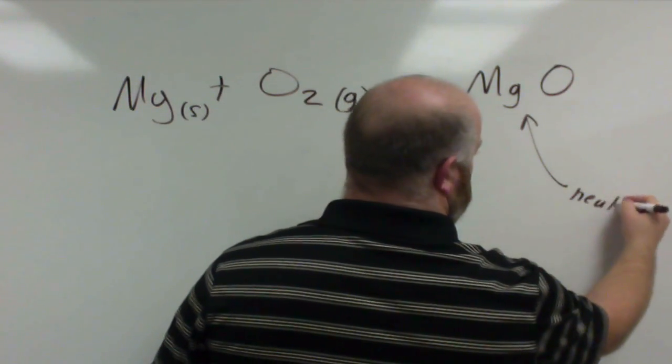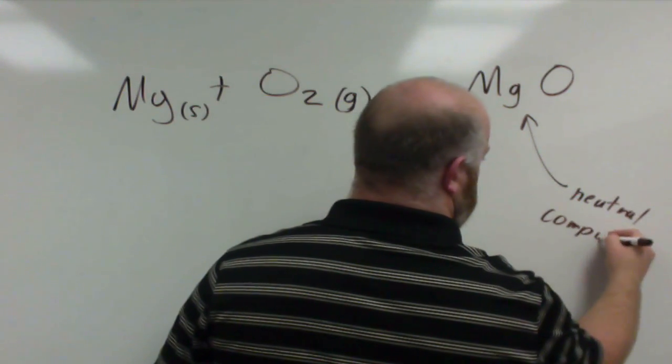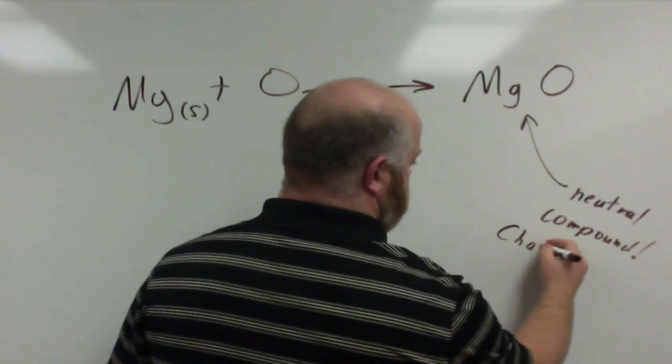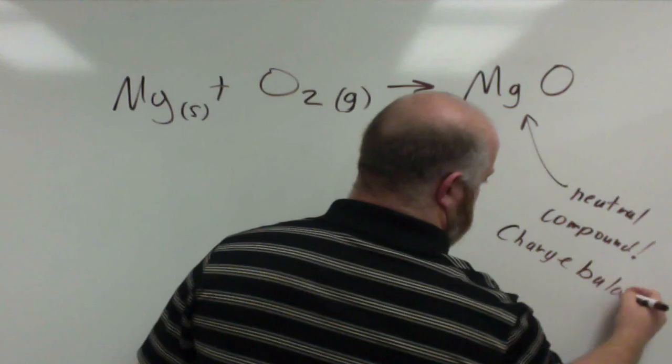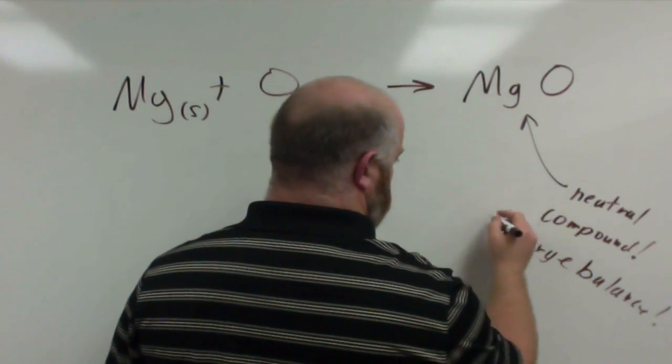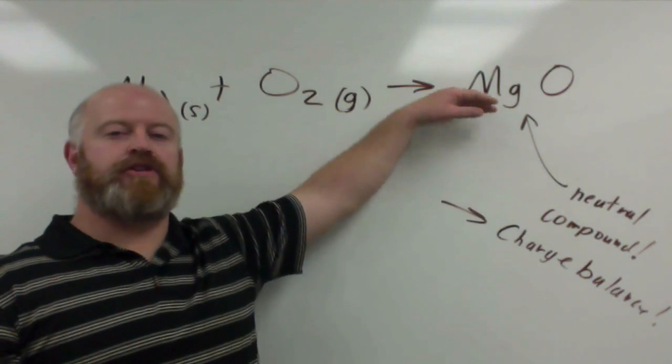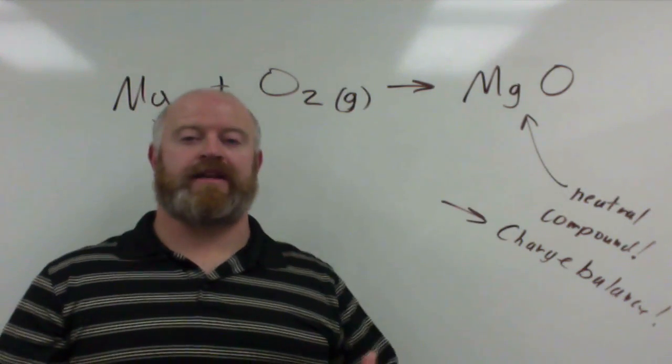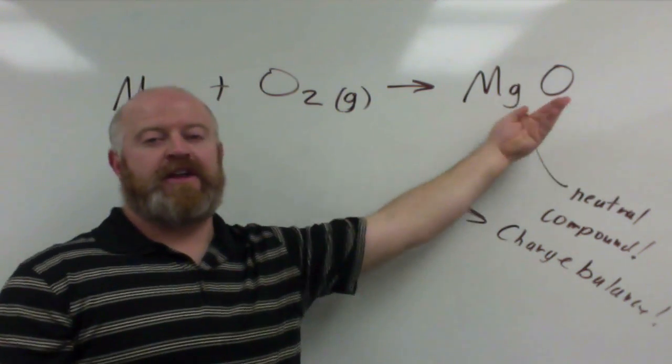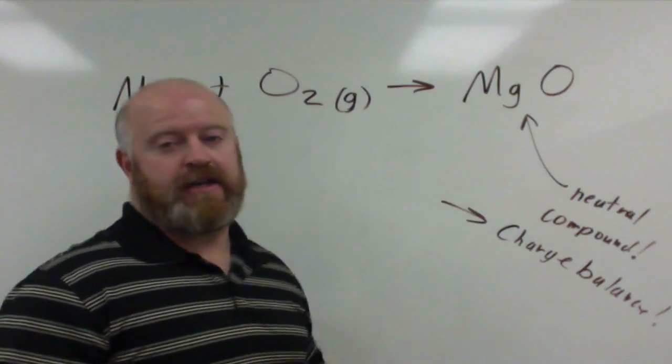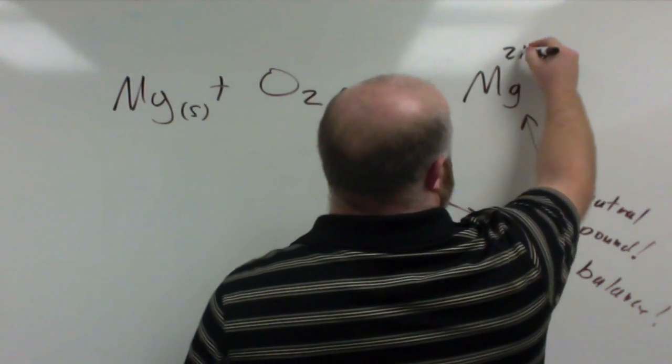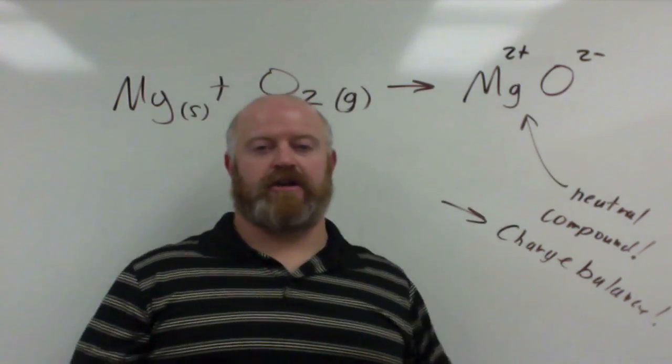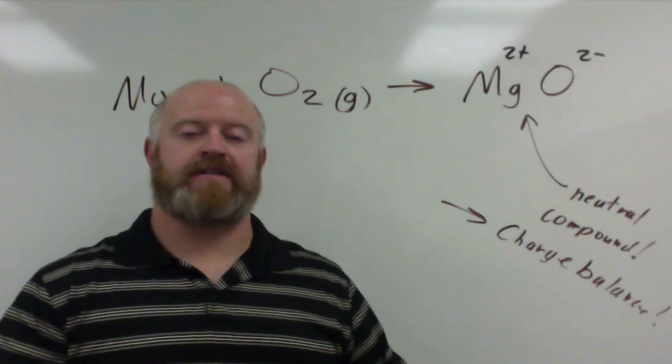Now when magnesium bonds to oxygen, here is one of our key things. You need to have a neutral compound. So we have to charge balance. Whenever you write a product, you need to first make sure that what you are putting in the product is charge balanced or that this is the actual right way to do magnesium oxide. Once you have done that, then you can go back and balance the entire equation. Magnesium is a 2 plus charge, oxygen is a 2 minus charge. So if we have a 2 plus charge and a 2 minus charge, that does make the proper equation for magnesium oxide.